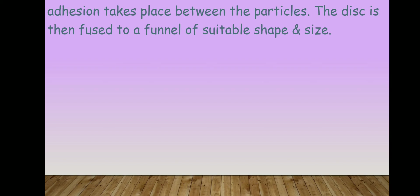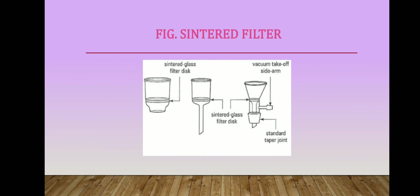Once prepared, you attach this disk to a funnel. This completes your Sintered Glass Filter. In the mouth of the funnel, you have the main disk which works as the filter medium. Looking at the diagram of the Sintered Glass Filter, it is fitted with a funnel and connected with a standard taper joint. You place the slurry from the top of the funnel and the filtration occurs through the disk.